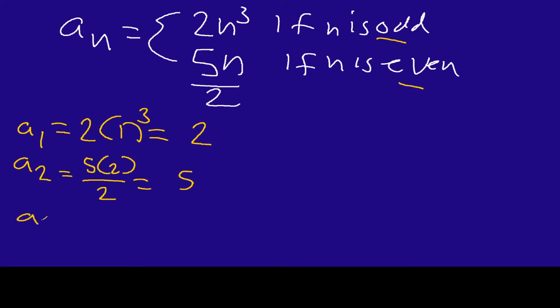Here's a_3 - this time is odd. So we're going to have two times three to the third power. That's going to be 54 because three to the third is 27 and 27 times two is 54.